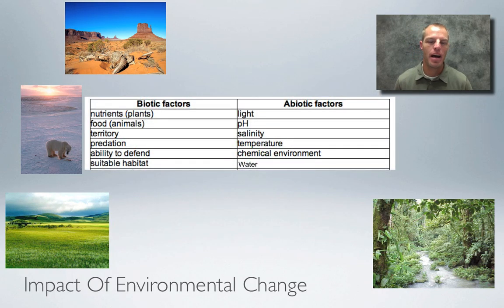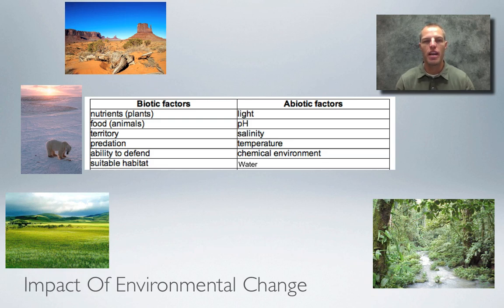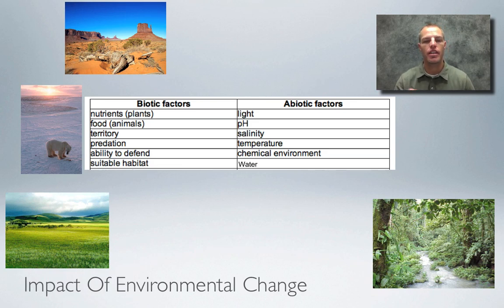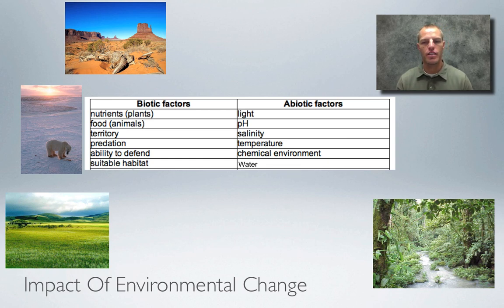Biotic factors are the living factors in the environment — for an animal, that's all the other animals and plants that make up that biome. Abiotic factors are non-living things like light availability, soil pH, temperature, water, and chemical environment. A lot of the environmental change occurring today due to chemical environment is caused by humans in the form of pollution.